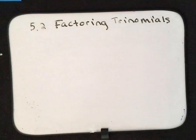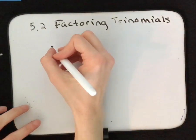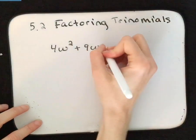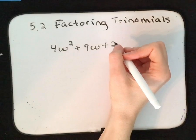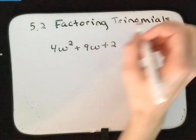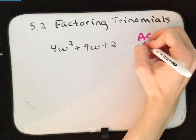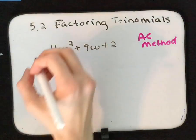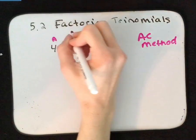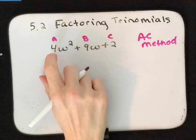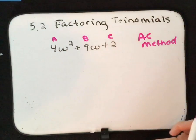Factoring trinomials — a trinomial means that you have three terms. For example, 4w squared plus 9w plus 2. I'm going to show you what is called the AC method for factoring. It's called the AC method because we have a, b, and c for our coefficients. The AC method looks for the coefficient of your square term and your constant term.